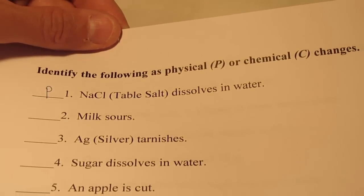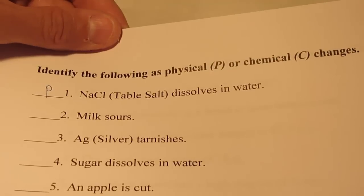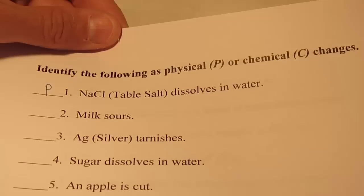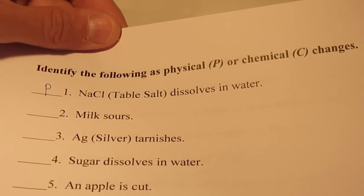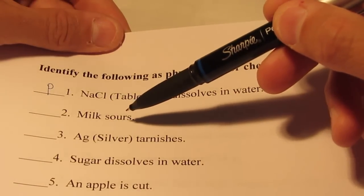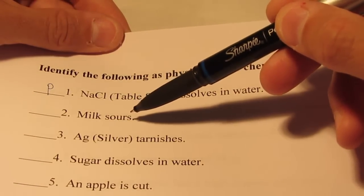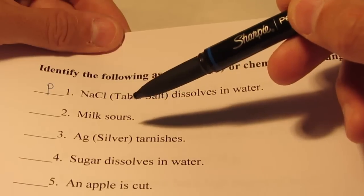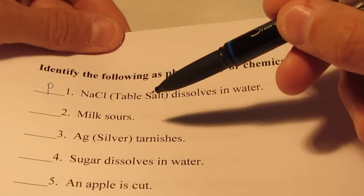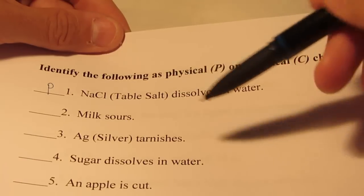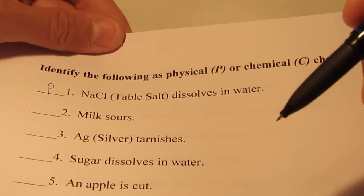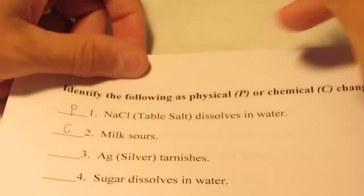How about milk souring? Is it a change that does not change the chemical identity of the substance? After milk sours, do I still have what I started with chemically, or do I have a change in which one or more substances are converted into different substances? Obviously I don't still have the same thing — we have a chemical change here.